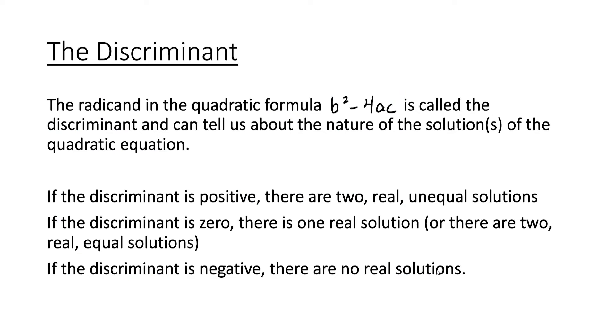Now we'll talk about something called the discriminant. The radicand in the quadratic formula, b squared minus 4ac, is called the discriminant and can tell us about the nature of the solutions of a quadratic equation.